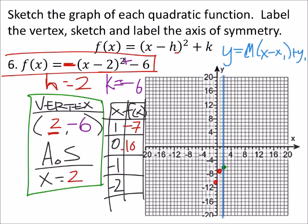When X is negative 1, then I've got negative 1 minus 2 is negative 3 squared is 9. Negative 9 minus 6 is negative 15. And it looks like that other point we won't be able to fit on there anyways. So we're good.